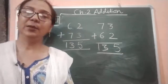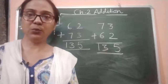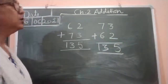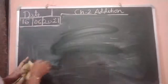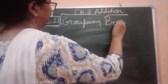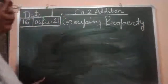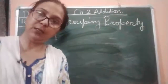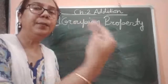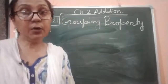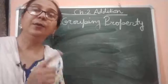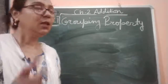Now we are moving to the grouping property. So, how do we make a group of numbers? Today we are going to learn the grouping property. Grouping means we have to make a group first. The condition is the sum will remain the same all the time.